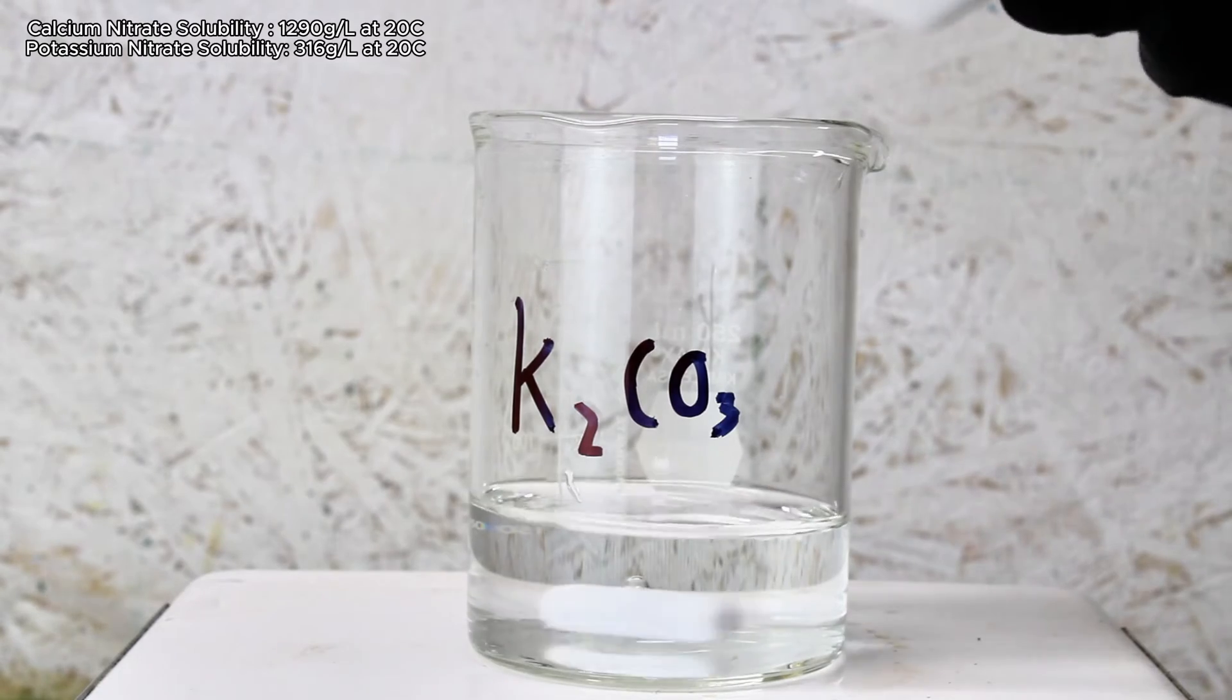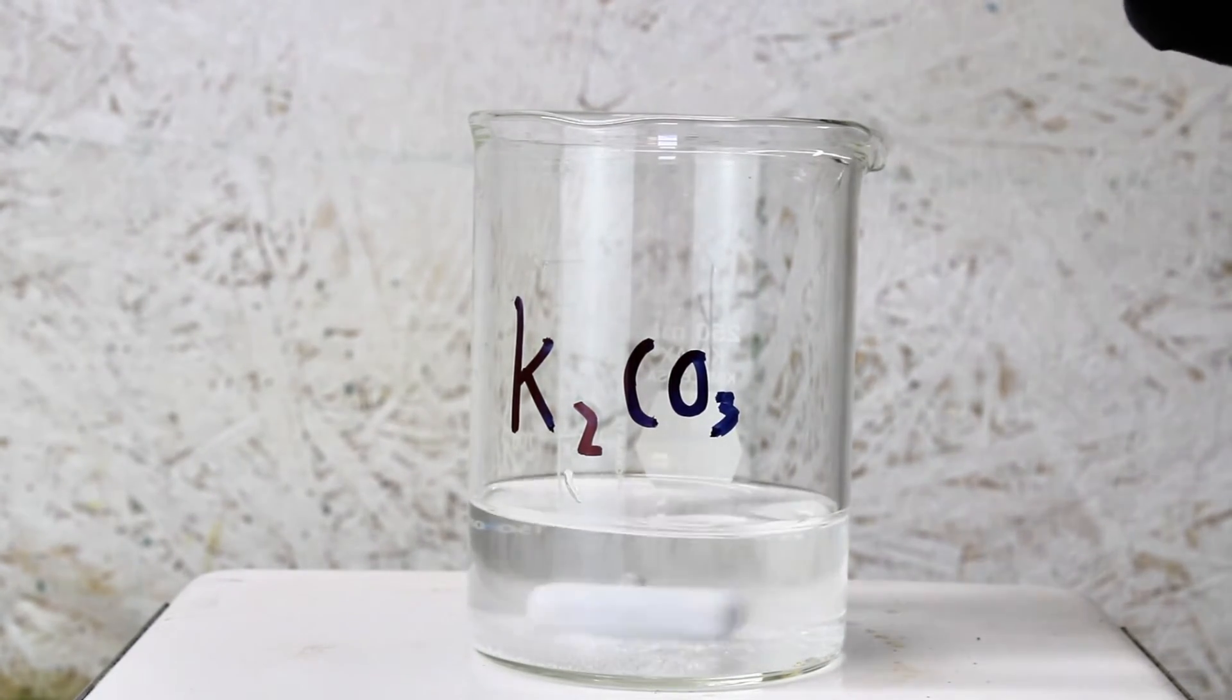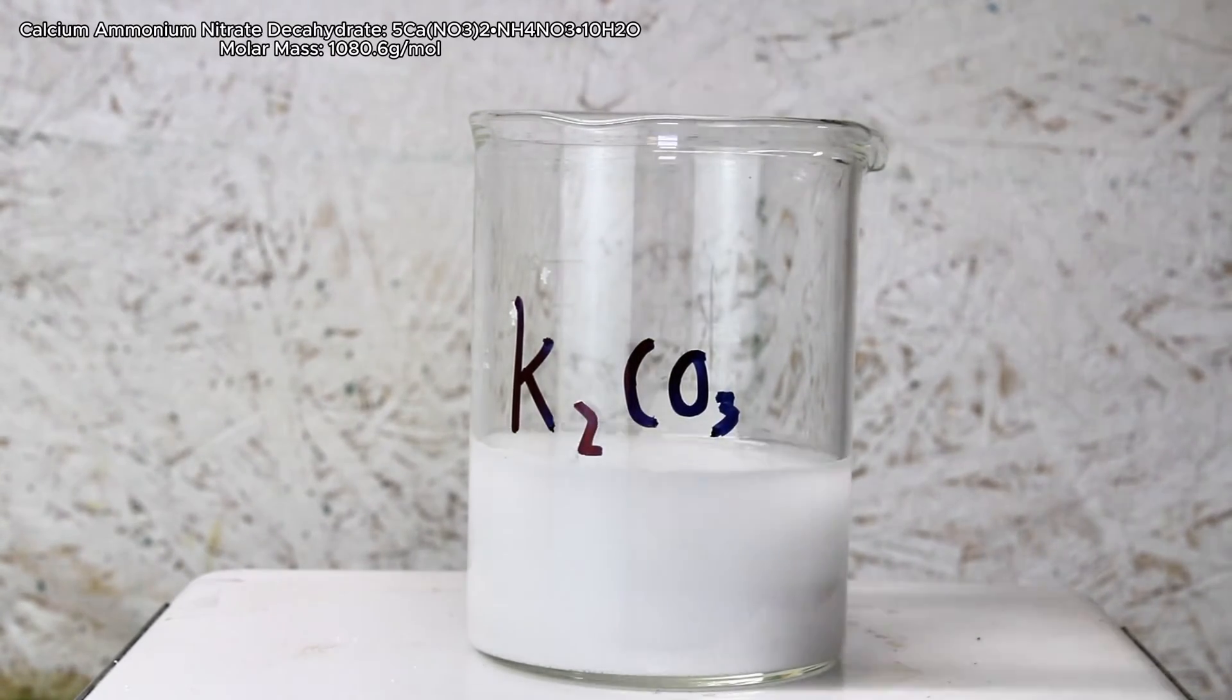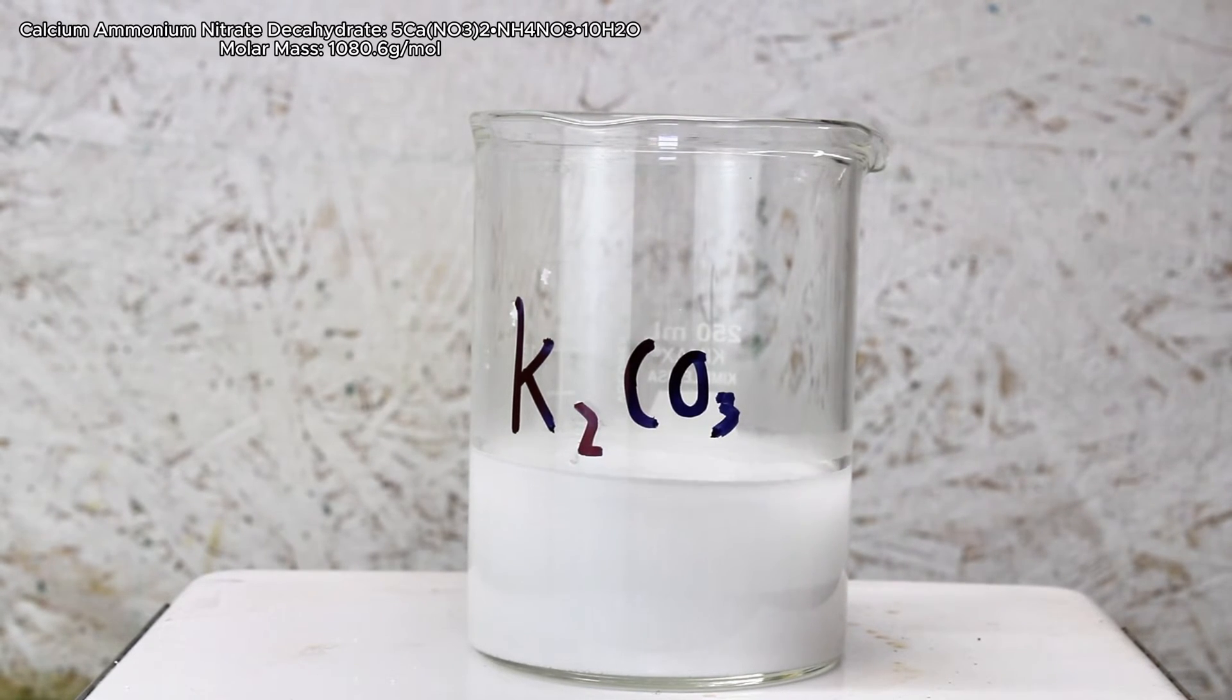Now, while those are dissolving, I want to note something that I didn't notice until after I'd finished this project, and that's that the calcium nitrate fertilizer here is actually hydrated calcium ammonium nitrate. As it turns out, this derivative of calcium nitrate is widely sold as calcium nitrate due to its ease of precipitation compared to the pure stuff. In the end, though, this doesn't make too much of a difference.